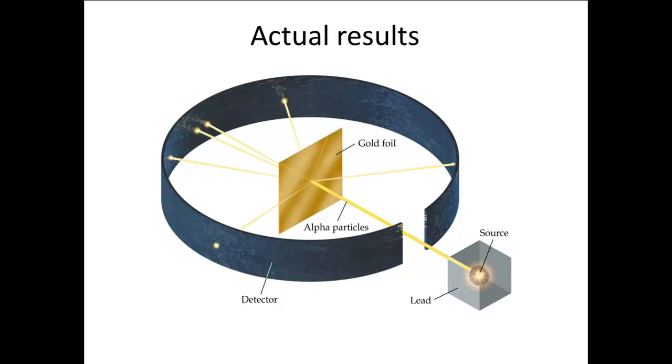When the detector was extended around the gold foil more completely, however, an experiment actually done by Geiger and Marsden, other members of the group, large deflections were discovered, and even some reflections.